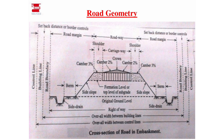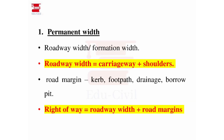Let's see the details in the slides. This is the formation width. The roadway width is the formation width. The roadway width equals the carriageway distance plus the shoulder. The right-of-way is broader than the roadway width. The roadway width should include the shoulder on both sides.